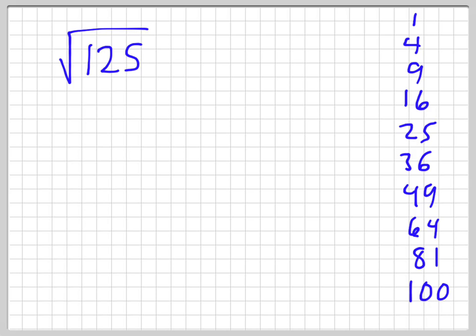So one of these perfect squares, or maybe even a bigger one, they keep going of course, divides into 125. So obviously the first choice that we might look for would be 25. So I know that 125 divided by 25 is equal to 5.